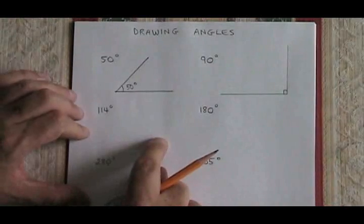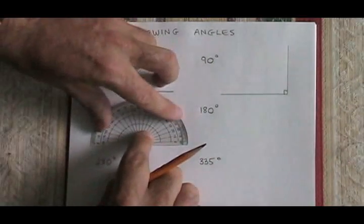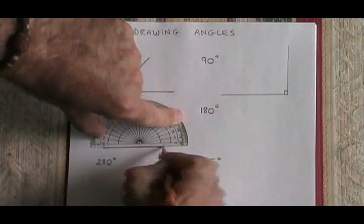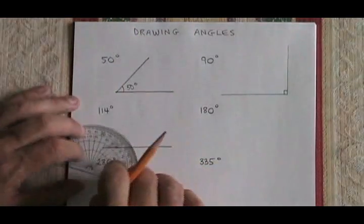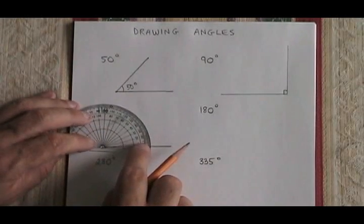Some angles you are asked to draw are bigger than 90 though. What do you do? Well, start with a straight line. Put your vertex of your protractor, the zero dot, on the vertex one end of the line.